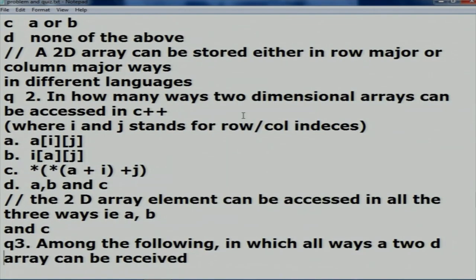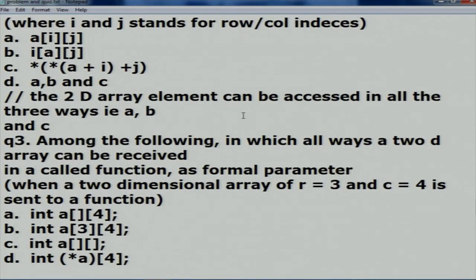Third question: in which ways can a two-dimensional array be received in a called function as a formal parameter? Options: int a[][4], int a[3][4], int a[][], and int (*a)[4]. It may be surprising that except option C (int a[][]), all three are correct. We had very great teachers in our groups, and through their cooperation we arrived at conclusions quickly. Unfortunately we could not submit due to a technical problem.